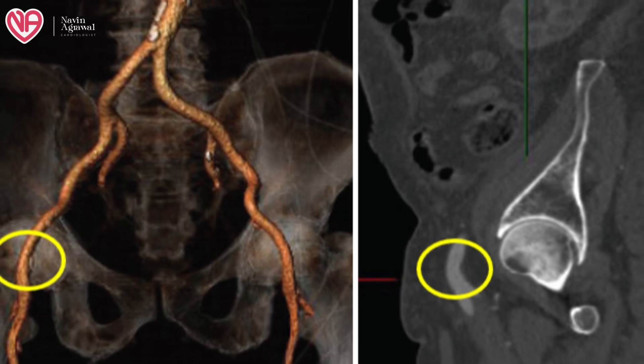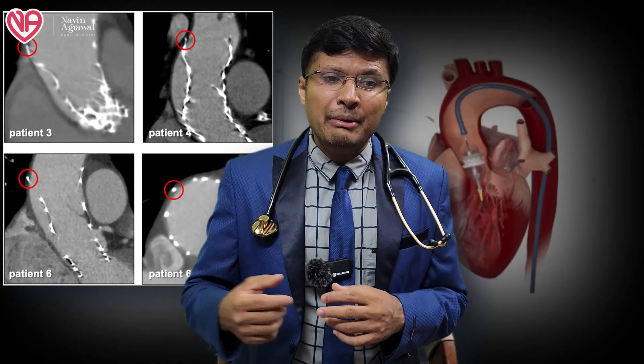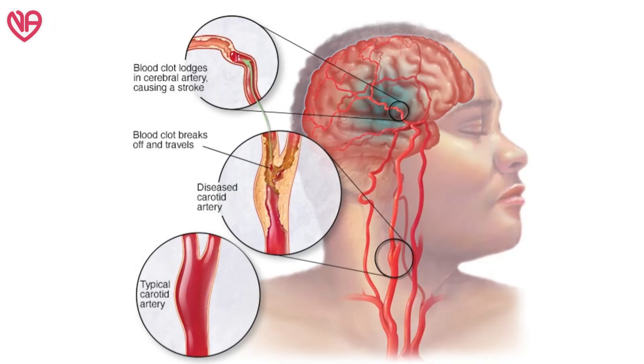The risks of TAVI include vascular complications at the puncture site such as significant bleeding or damage. Valve malposition or valve migration may also occur. Sometimes a stroke or neurological complication might occur. Infection at the valve treatment site is possible. Heart rhythm abnormalities may occur because the conduction system, which is closely located to the aortic valve, might be damaged by the stent. Some patients might develop kidney damage due to the use of contrast dye.